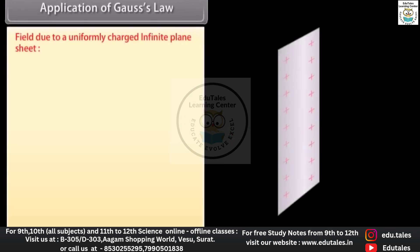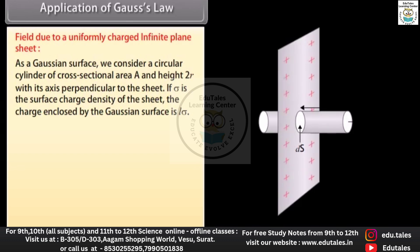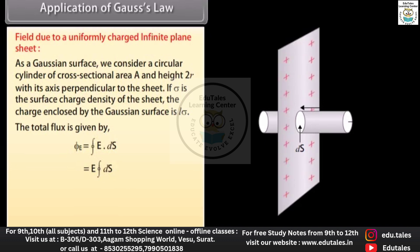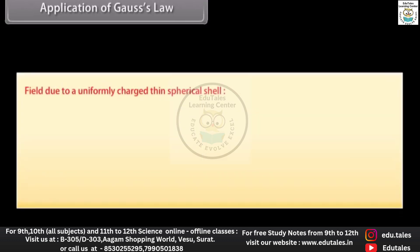Field due to a uniformly charged infinite plane sheet: as a Gaussian surface we consider a circular cylinder of cross-sectional area A and height 2R with its axis perpendicular to the sheet. If σ is the surface charge density, the charge enclosed is Aσ. We have ΦE = ∮E·dS = 2AE. Applying Gauss's theorem, the electric field at any point at distance R from the sheet is E = σ / (2ε₀).